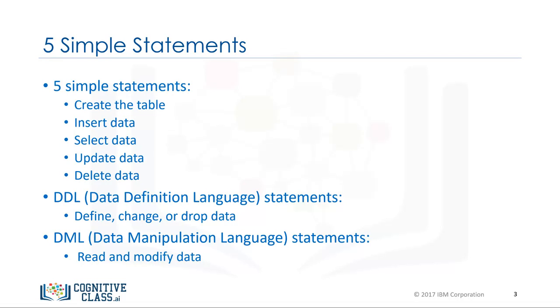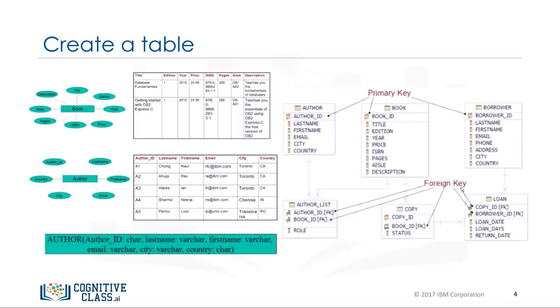We will start at the beginning and create a table. In a relational database, the data is organized in tables, like in a spreadsheet, which is columns and rows. Based on the book entity and author entity examples, we create the tables using the entity name. The entity attributes will be the columns of the table.